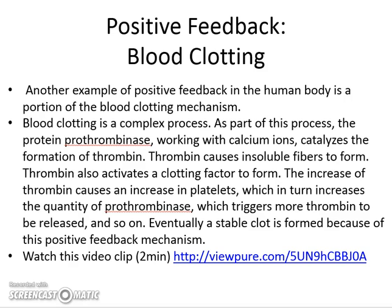Another example is blood clotting. If your blood were clotting all the time within you, you would die — so it's not something that normally happens. It only happens when it's needed, and it goes away from normal homeostasis. For example, you cut yourself, blood comes out, and you need it to clot so it forms a scab and you don't bleed to death. The protein prothrombinase works with your calcium ions to form clots using thrombin and fibers. Blood clotting is an example of positive feedback — when you cut yourself, a positive signal increases those proteins, and then as soon as your blood clots, thrombin is no longer released and it becomes stable. Please watch this two-minute video about positive feedback and blood clotting.